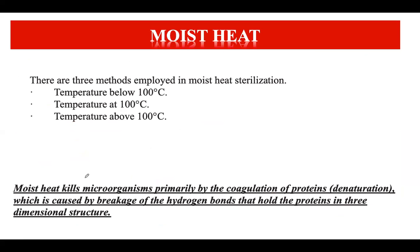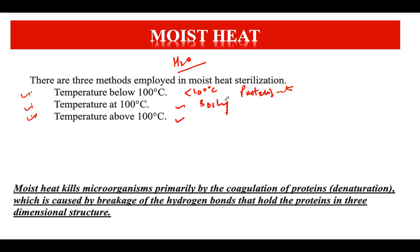The moist heat method involves water. There are three subtypes based on temperature: below 100°C (pasteurization), at 100°C (boiling), and above 100°C (autoclaving). These sterilization methods are all used in different circumstances according to the need of the object.